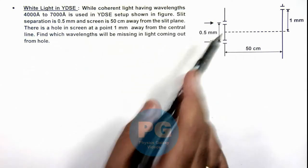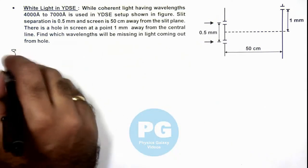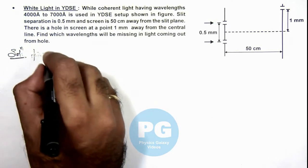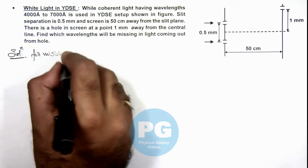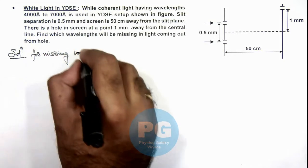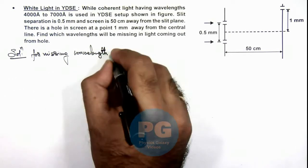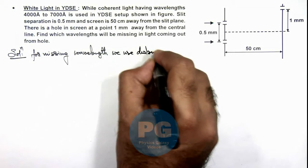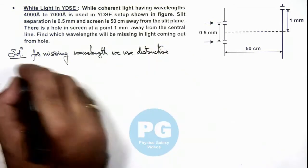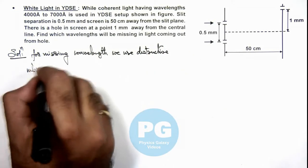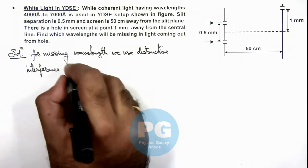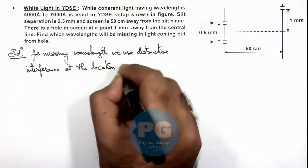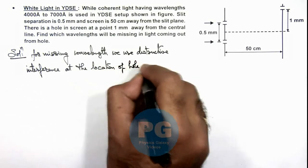So here we can analyze. First, for missing wavelengths, we use destructive interference at the location of hole in screen.